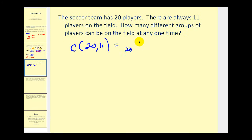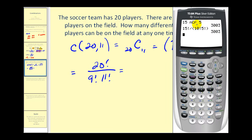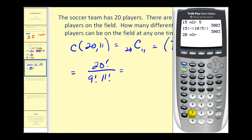We can write it as 20 choose 11, which equals twenty factorial divided by (20 minus 11) factorial — that's nine factorial — times eleven factorial. I'm going to use the calculator due to time. Press twenty, Math, probability, option three, and then press R which is eleven. So we have one hundred sixty-seven thousand nine hundred sixty possible combinations of players on the field.